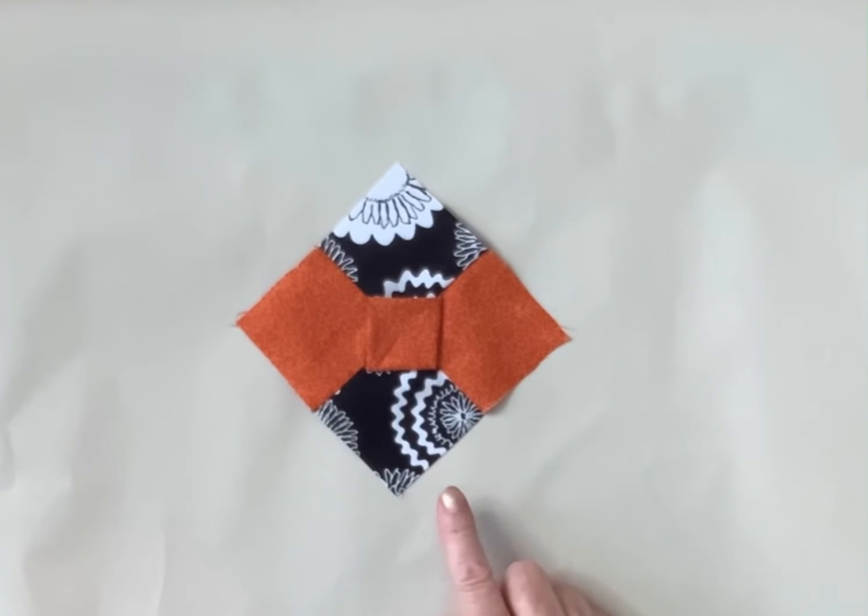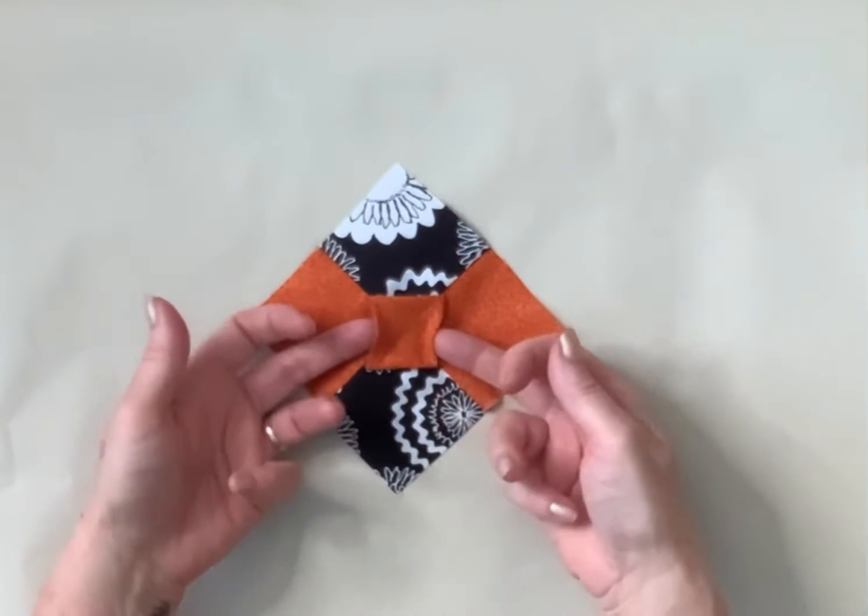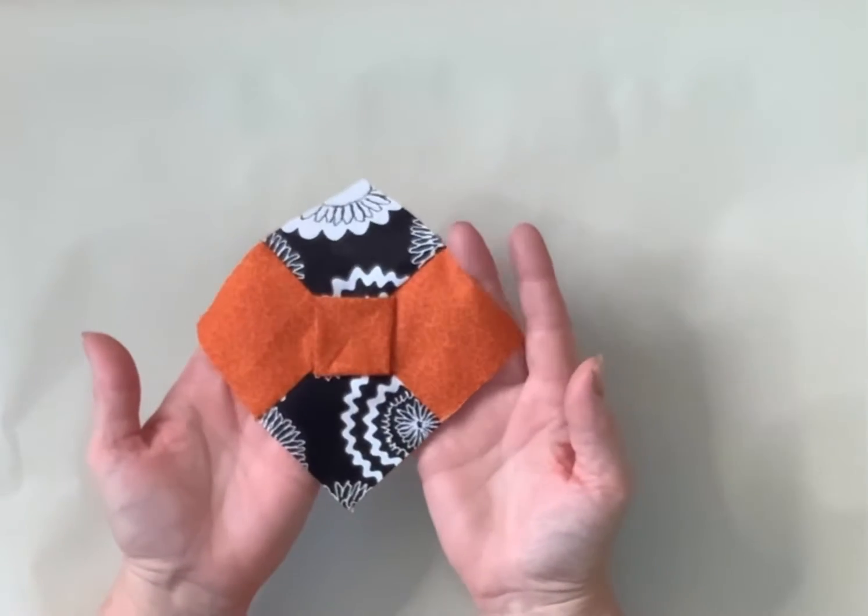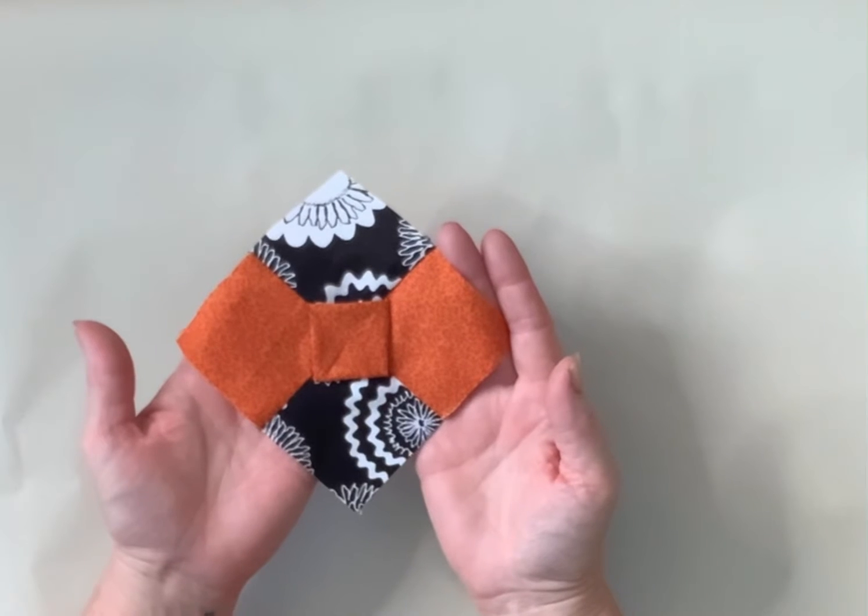Hello, this is a requested block from Faye. It's the bow tie and it's got a 3D section in the centre and I'm going to show you how to make it.